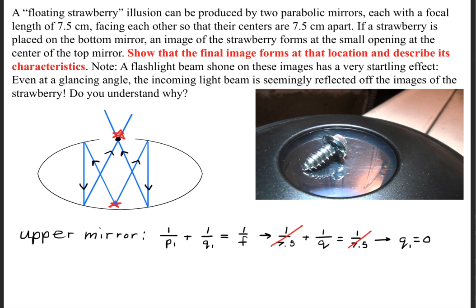So when we solve this, notice that these cancel out, and we get an image that is 0. Okay, now hold on. How does that work?